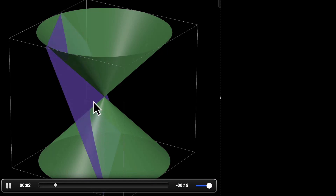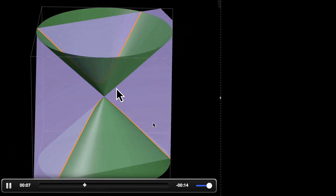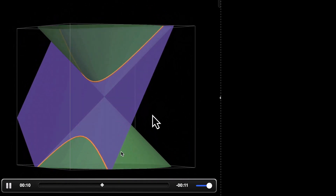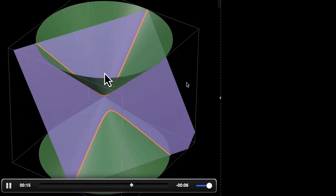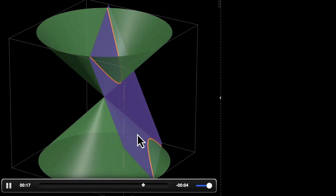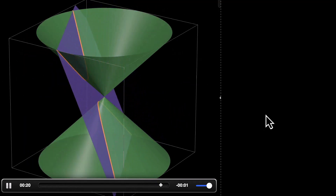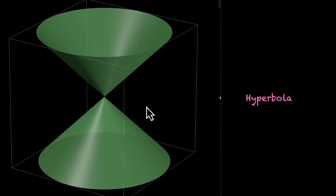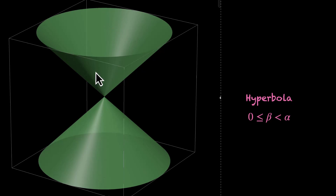You might be wondering what happens when this angle beta is less than alpha — that's the conic section we'll see next. So let's make beta less than alpha. This is called a hyperbola. It has two branches, one on this side and the other on this side. For a hyperbola, the plane has to make an angle beta that's less than alpha. It can be zero as well — imagine a plane making an angle of zero with the axis, meaning the axis is lying on the plane. What we get is still a hyperbola.